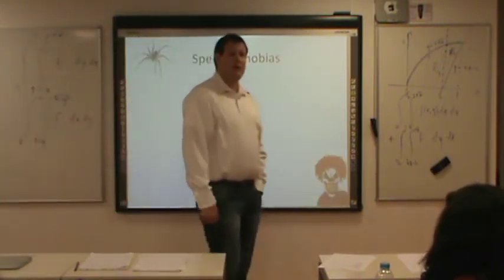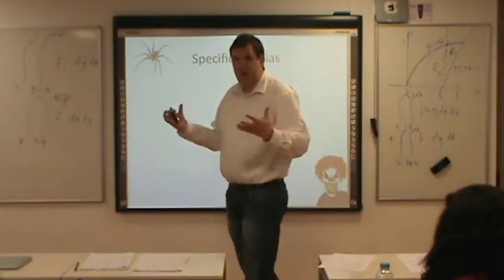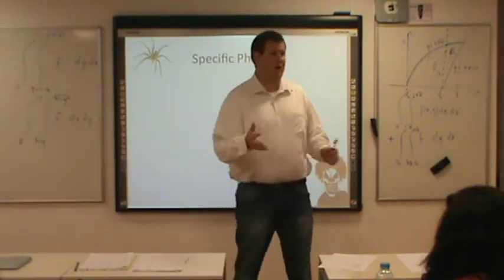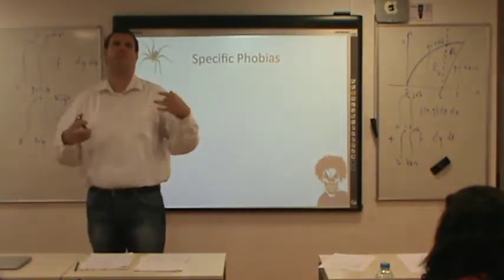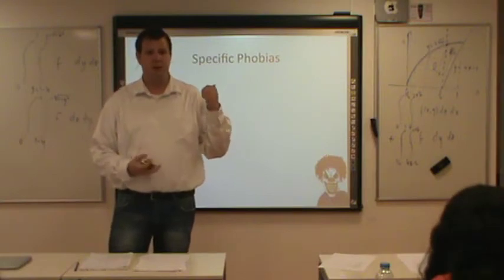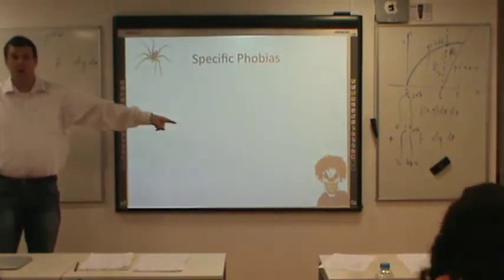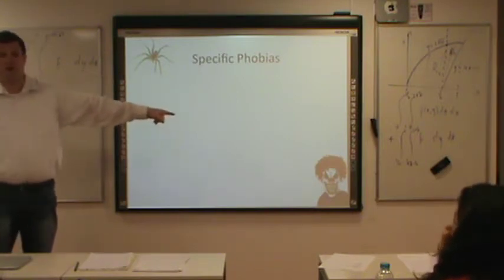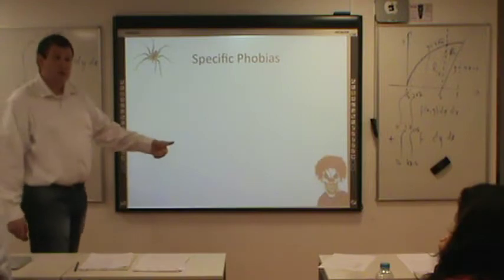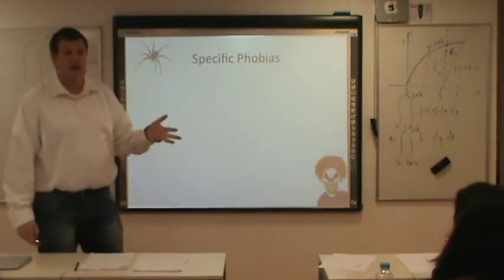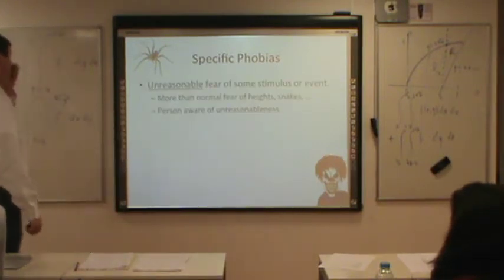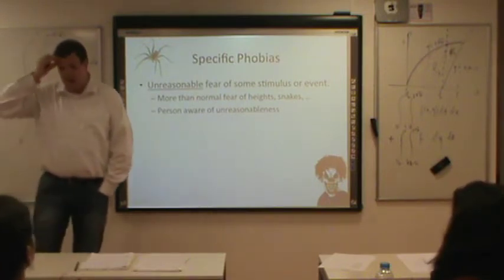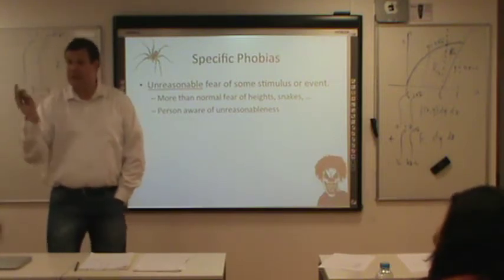What are specific phobias? With generalized anxiety you're anxious about almost everything; with panic disorder it's not that you're anxious about everything, but that unexpectedly you experience a panic attack. With specific phobias, you're afraid of specific things — particular stimuli. Some people are really afraid of spiders, clowns, dogs, blood, snakes, darkness, or being in a small enclosed space. These are unreasonable fears of some stimulus or event. Think about these disorders as being adaptive in the undisordered state.